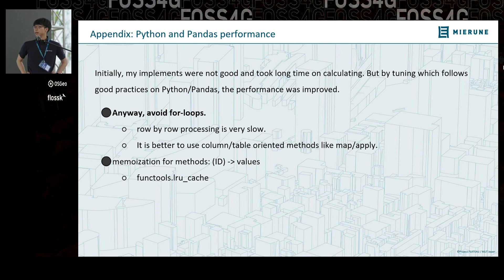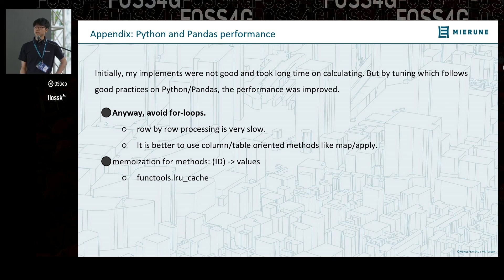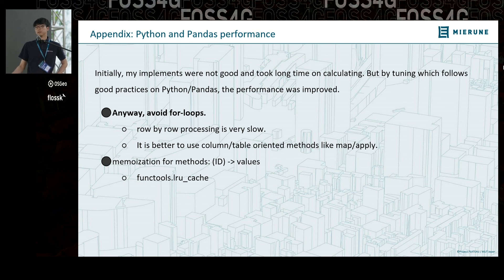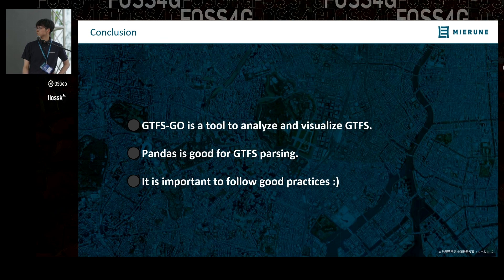Regarding Python and Pandas performance: initially my implementation was not good — very primitive — and took a long time to calculate. By tuning to follow best practices in Pandas and Python, performance was improved. First, avoid for loops — they are very slow. It is better to use column/table-oriented methods like map and apply provided in Pandas. Also, functools cache is very useful. In summary, GTFS Go is a tool to analyze and visualize GTFS data, and Pandas is good for GTFS parsing. It is important to follow good practices. Thank you.